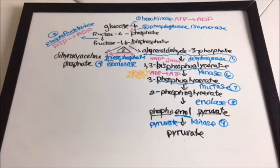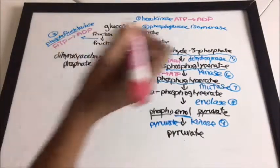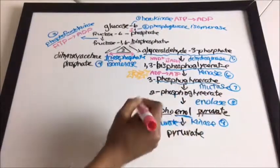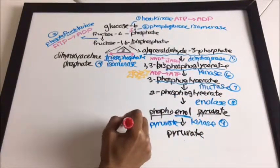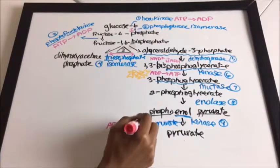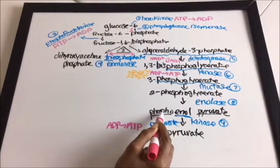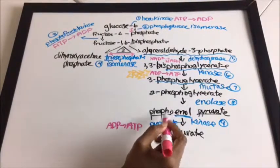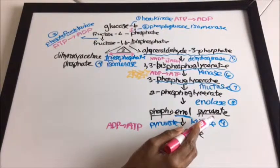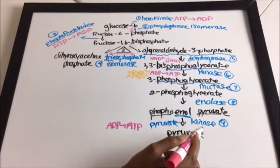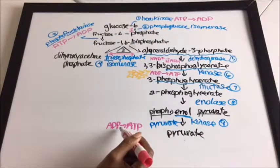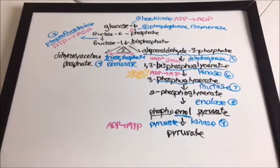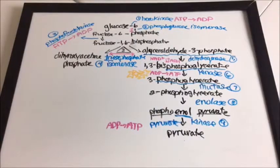Our last reaction: ADP is converted to ATP between phosphoenolpyruvate and pyruvate, with the enzyme pyruvate kinase.